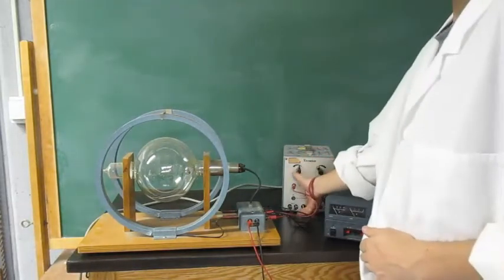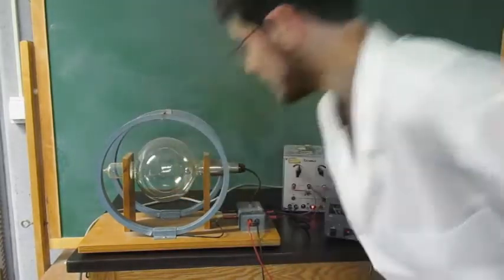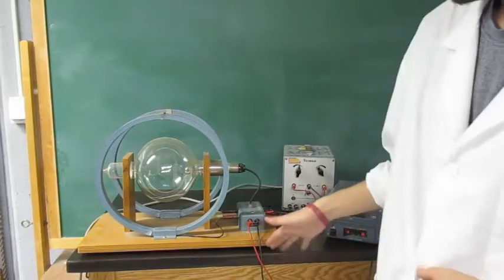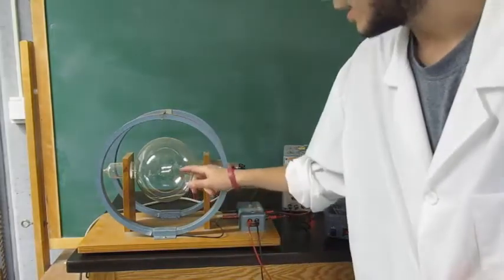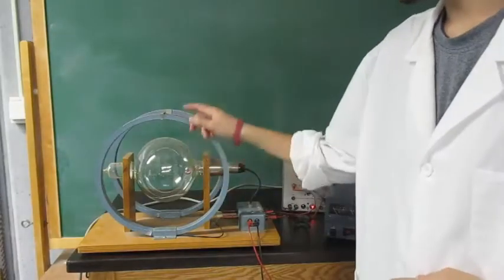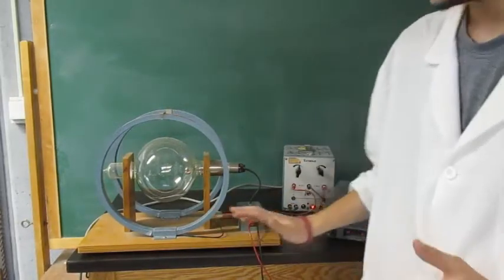So what you want to do is turn on your power supply which is this one and it might take a little while for it to heat up but after about a minute or so with dim lighting in the room you can see a beam of electrons going straight up and when that happens you're all set.